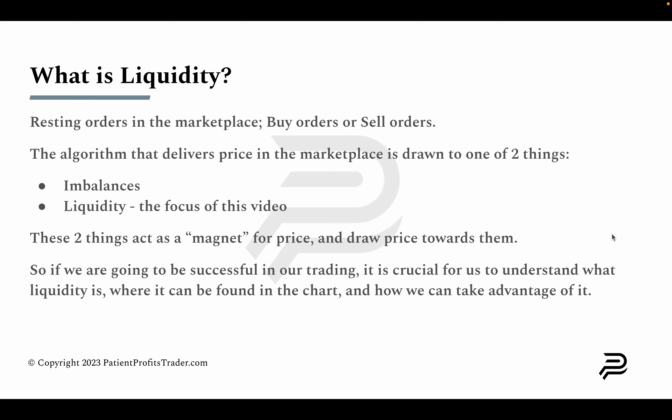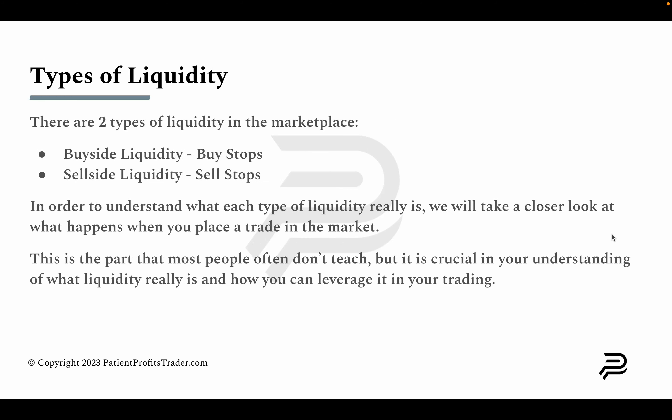If the market is constantly being drawn to liquidity, and we're constantly making decisions as traders about whether the market is going to go up or down, understanding what liquidity is and where to find it could place the odds in our favor when anticipating where price is likely to go. There are two types of liquidity in the marketplace: buy side liquidity (buy stops) and sell side liquidity (sell stops).